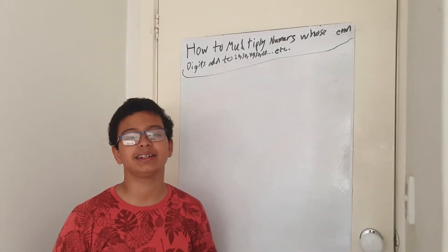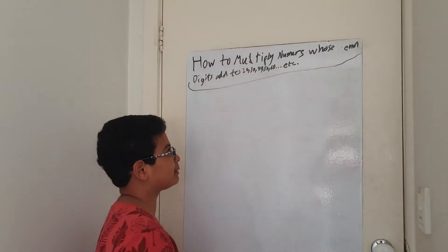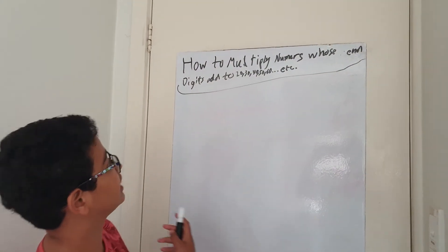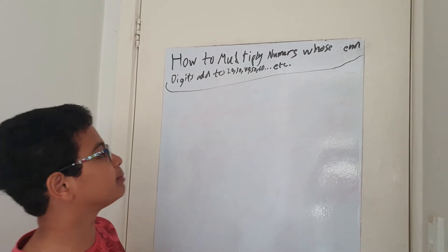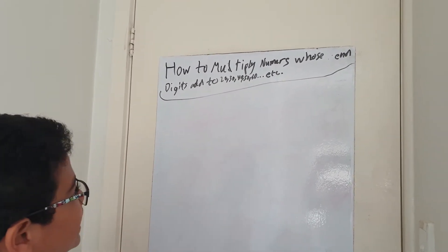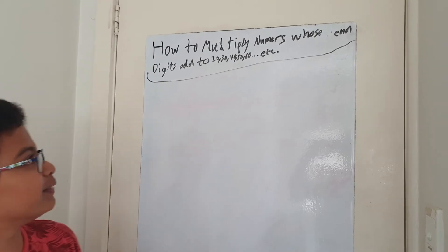Hello everybody, and today I'm going to be showing you how to multiply numbers whose end digits add to 20, 30, 40, 50, or 60.